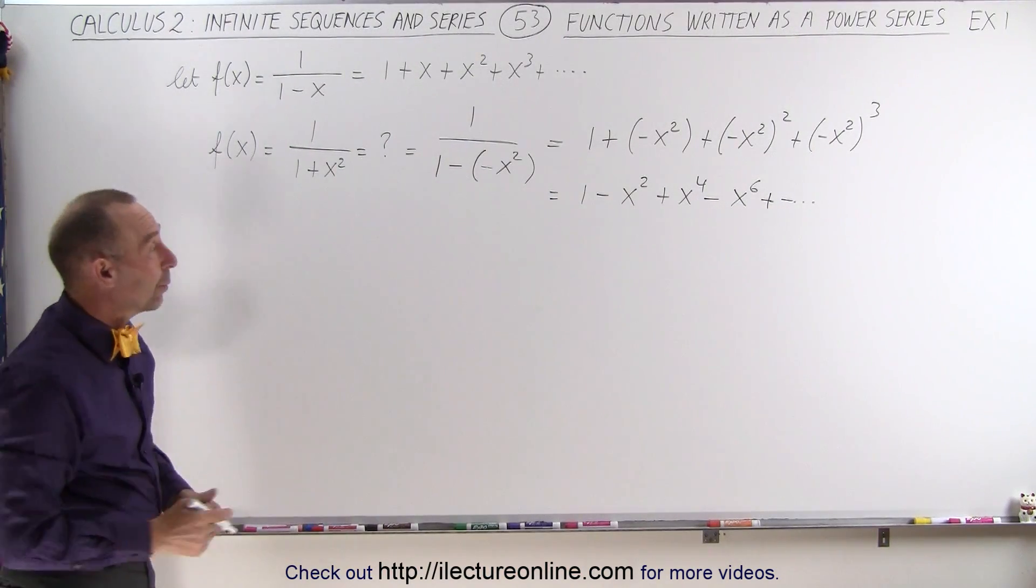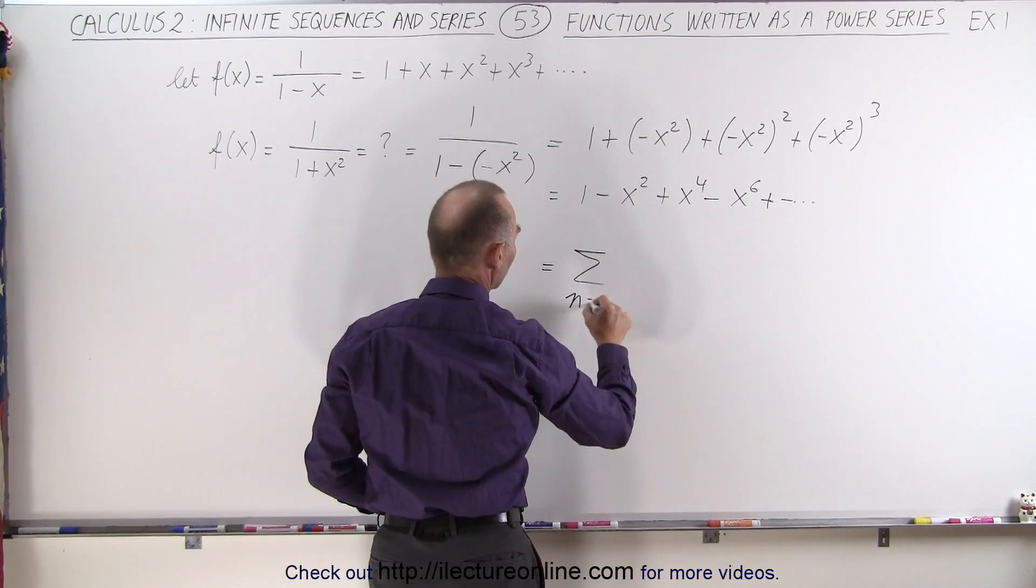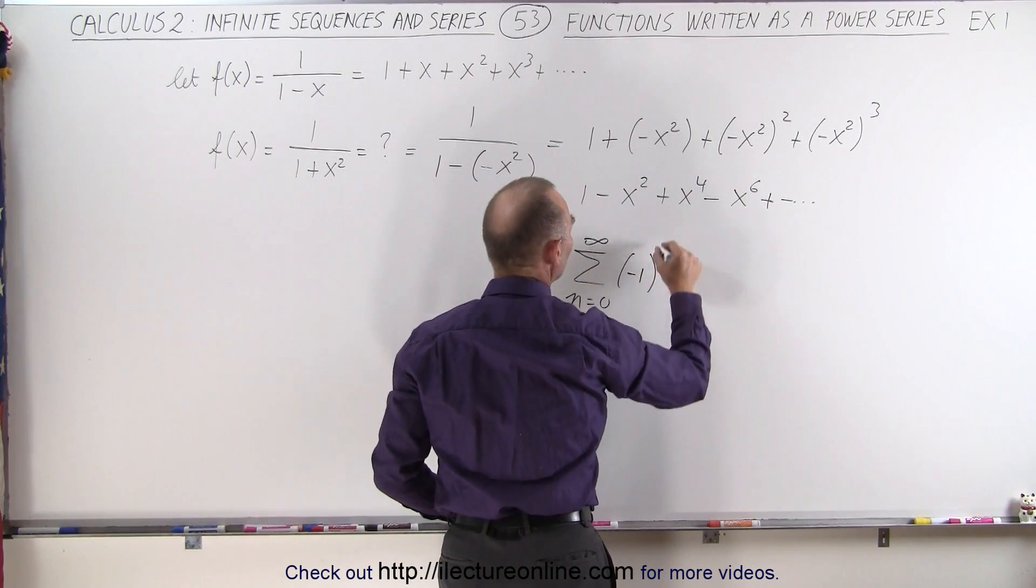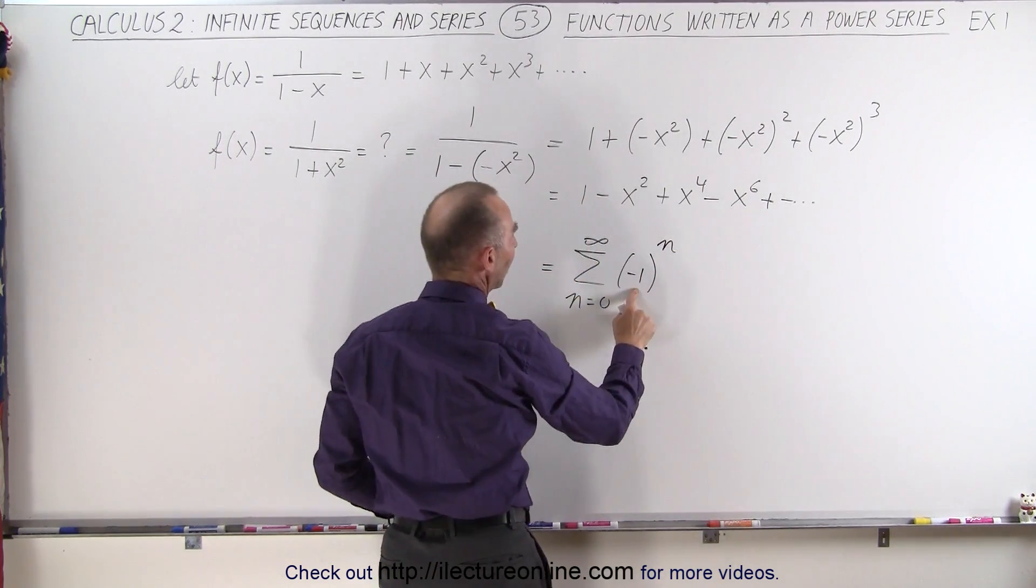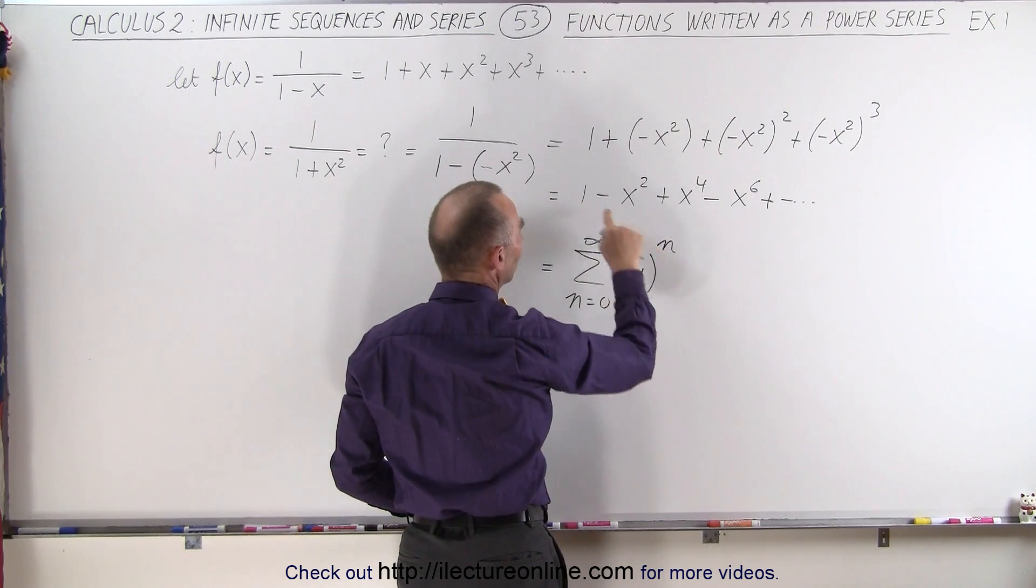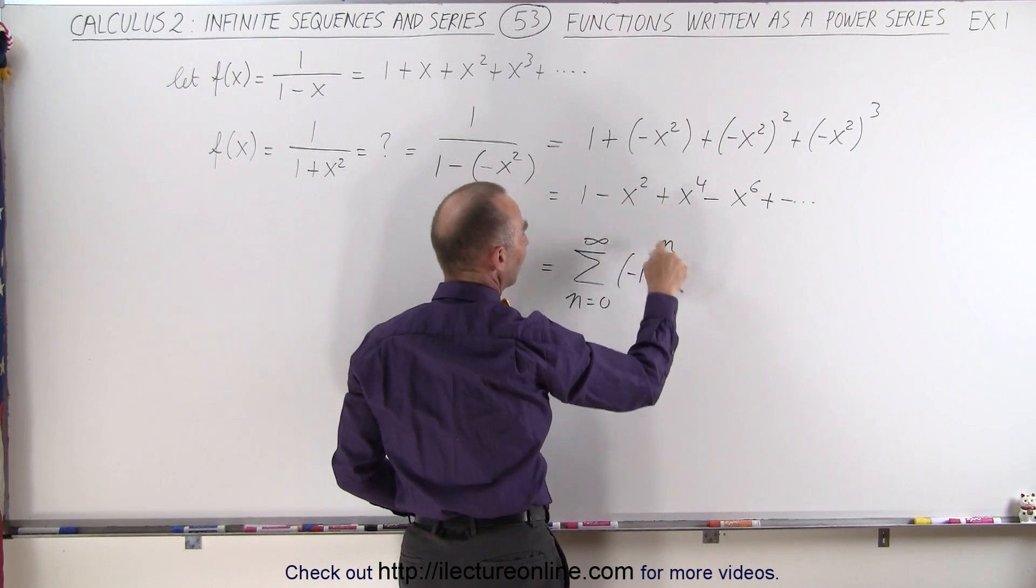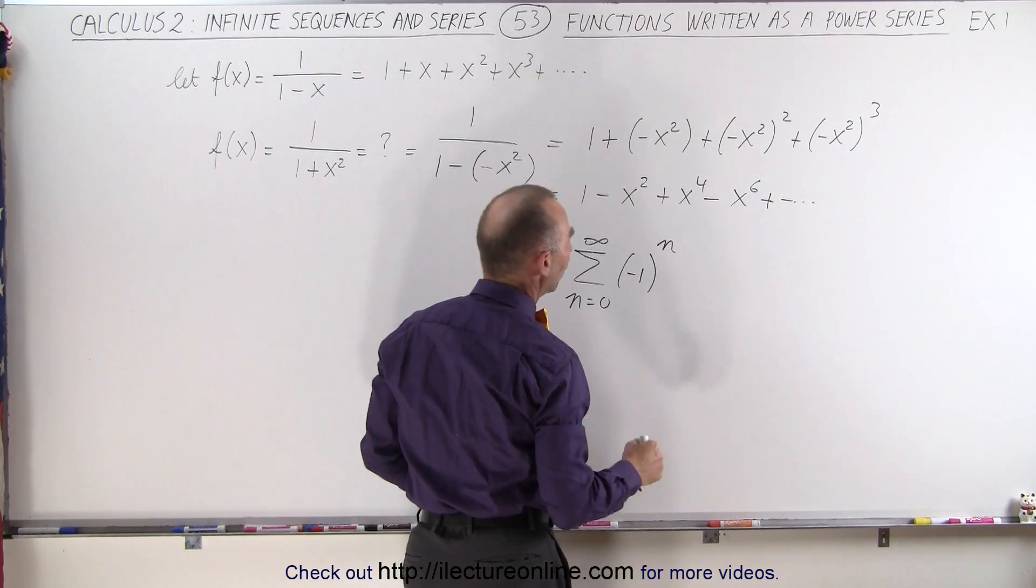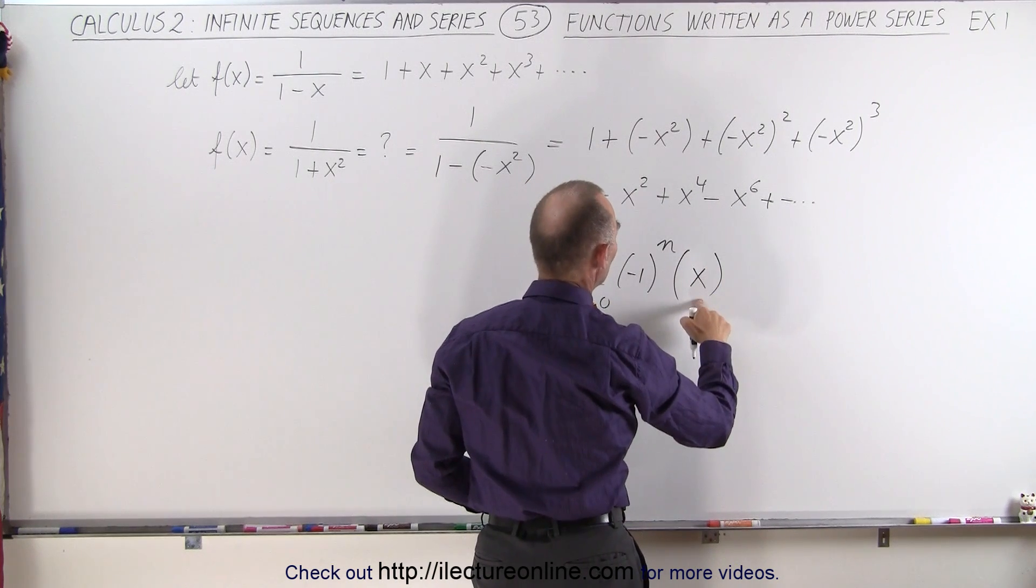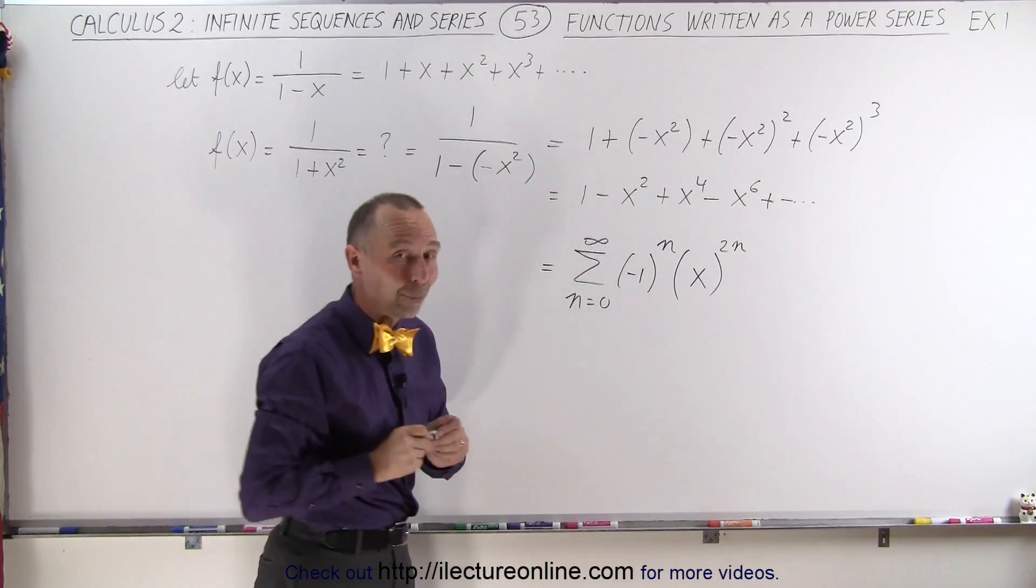And so that means that we can write this as the sum as n goes from zero to infinity of minus one to the n power, because that allows us to alternate the signs. When n equals zero, that gives us one; when n equals one that gives us negative; n equals two gives positive, and so forth. And then we write x raised to the 2n power.